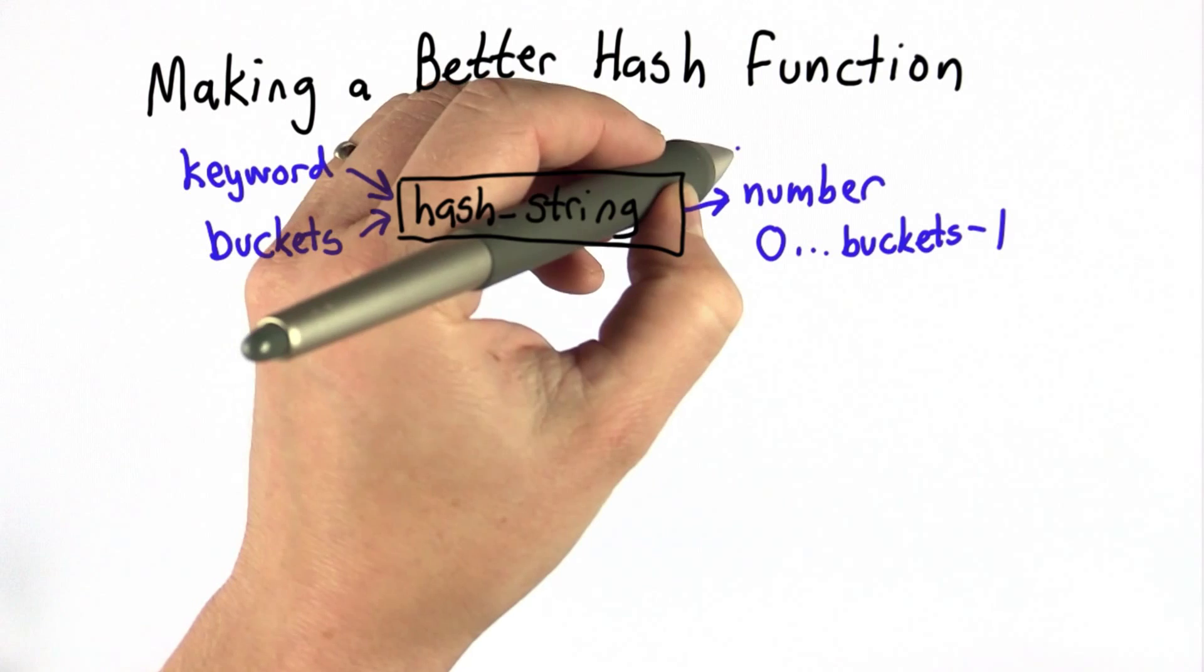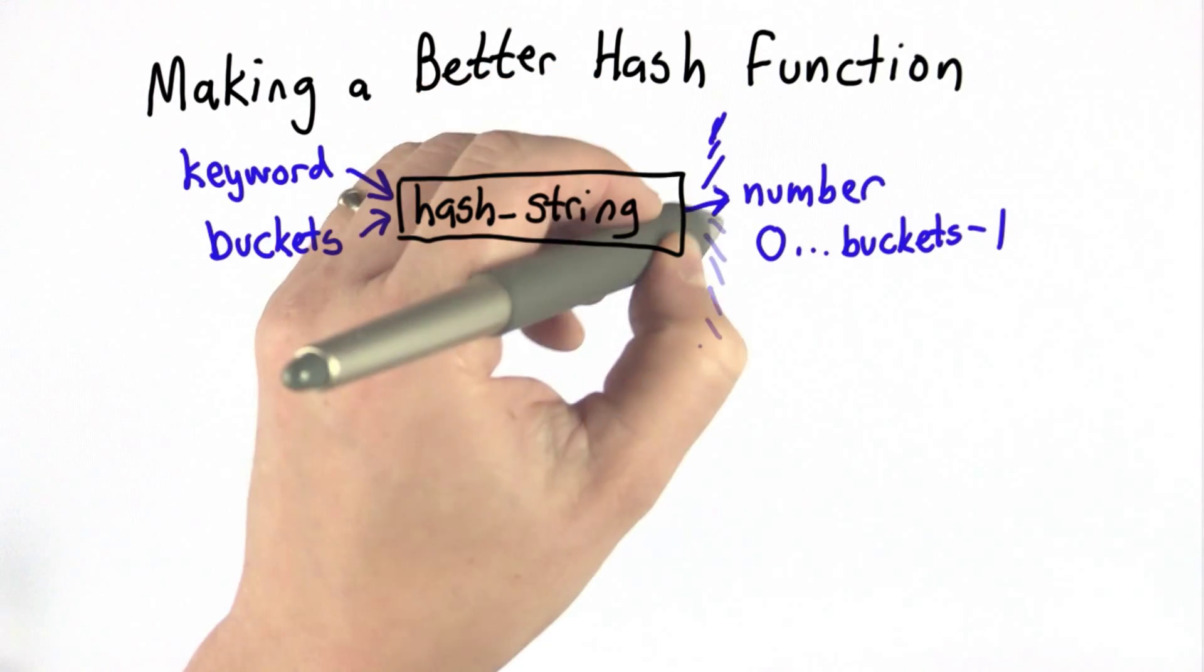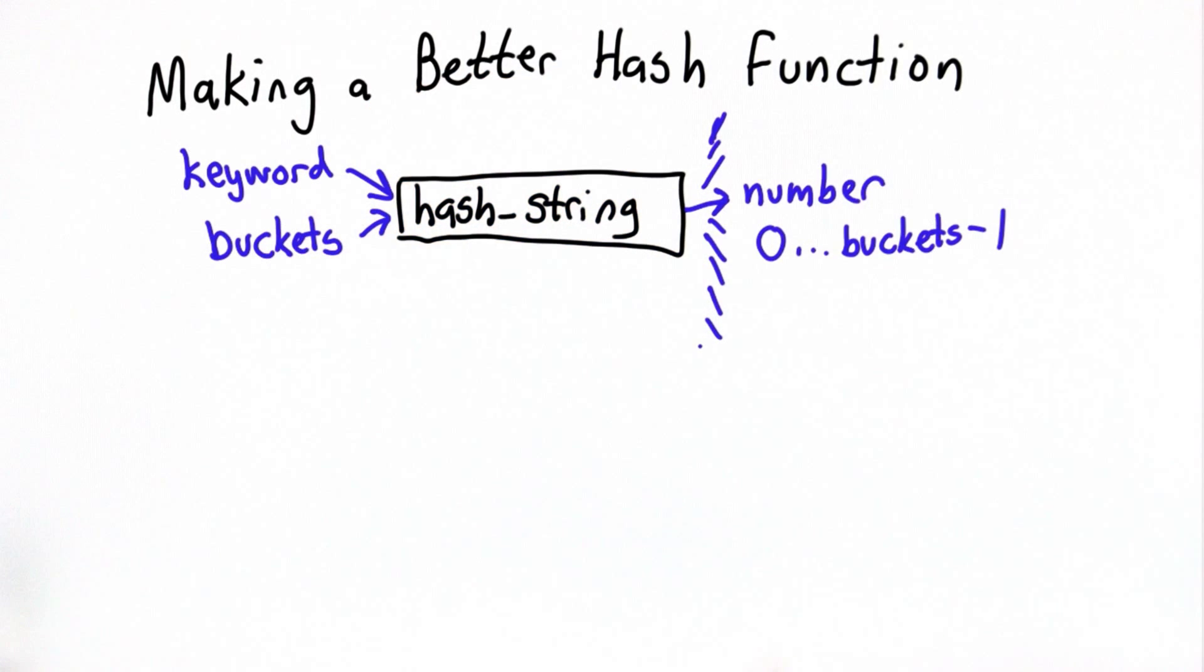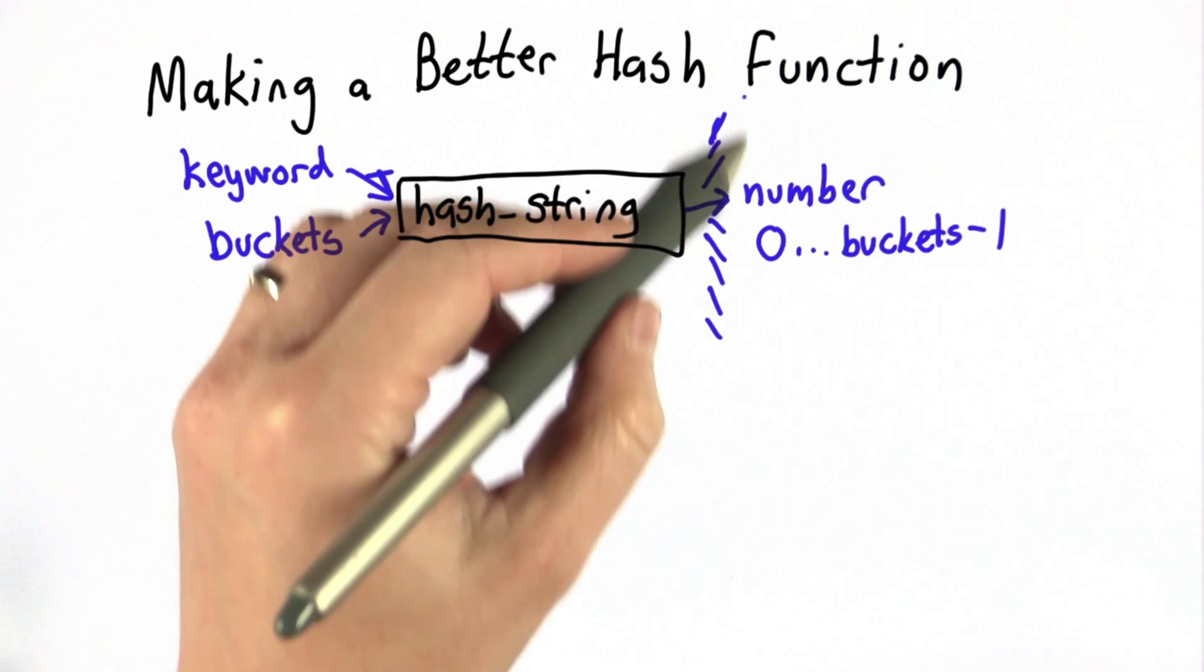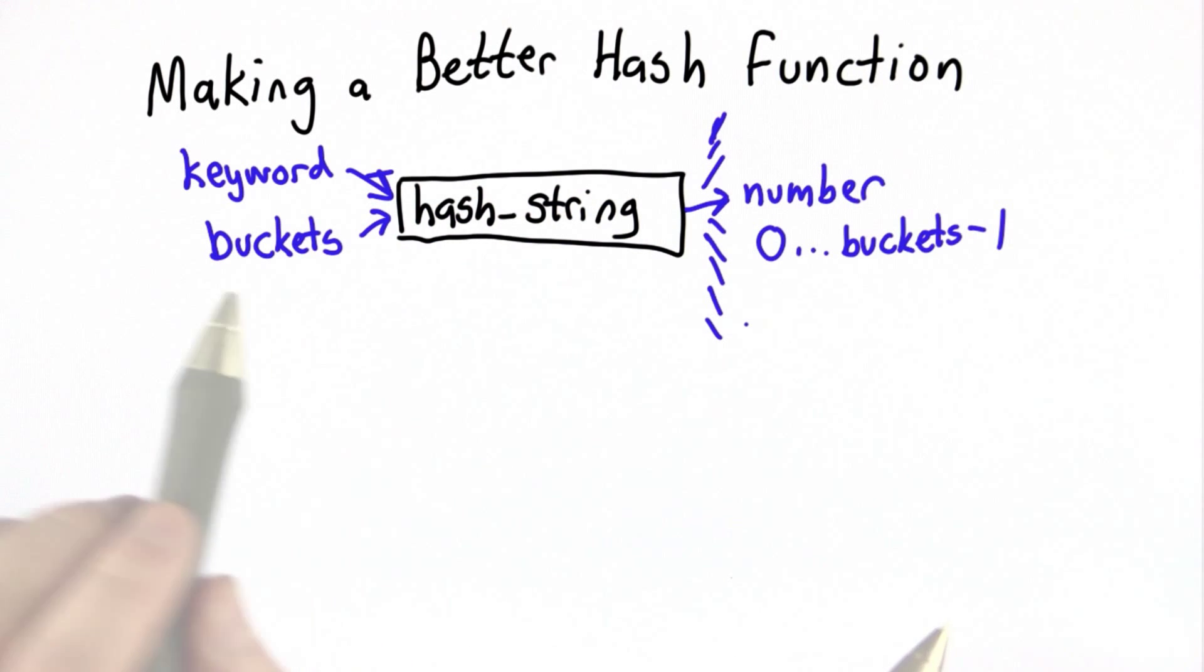Our goal is for these numbers to be well distributed, so we can have any number of buckets we want. The keywords will be spread evenly among the buckets, and every time we hash the same keyword, we'll get the same bucket so we'll know quickly where to find it.